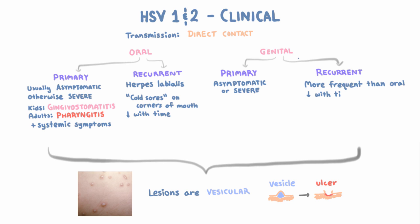The bad news is that although transmission is most likely to occur when someone has an active lesion that you can see, you can actually have reactivation without lesions — in which case you can get asymptomatic shedding of the virus. That means you don't have to have an apparent active lesion to be infectious.